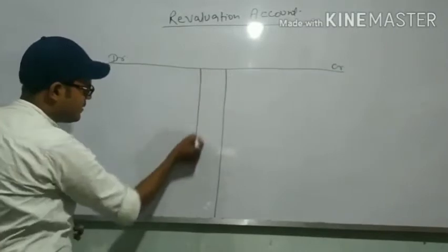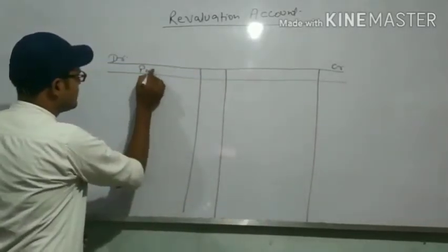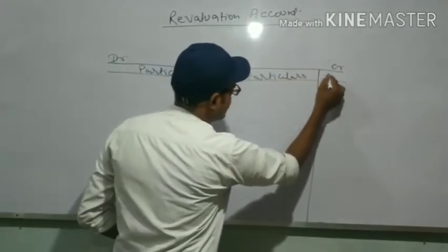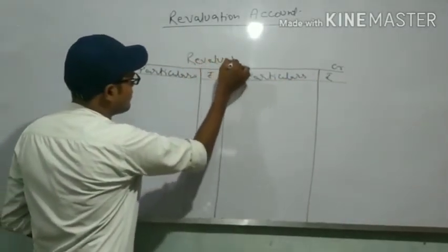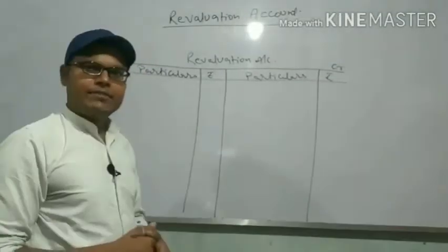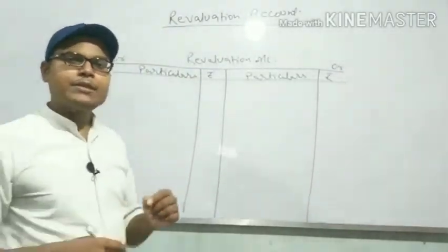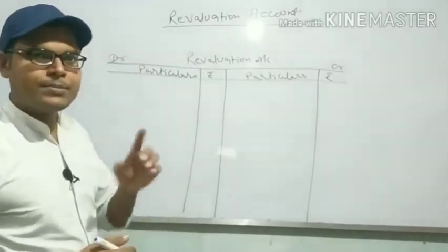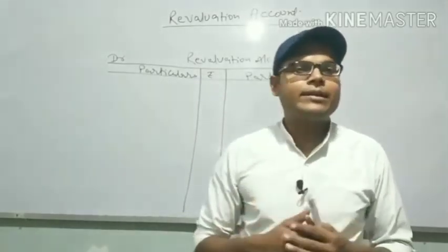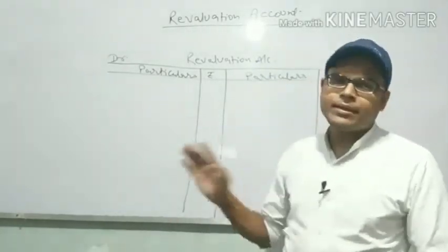The Revaluation Account has particulars and amount on both sides. This is our T-shape format — debit side on the left and credit side on the right. The increase or decrease in the value of assets and liabilities will be posted on our Revaluation Account.